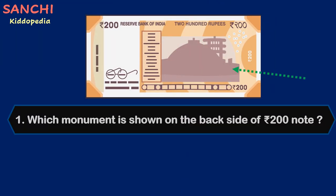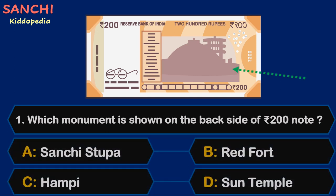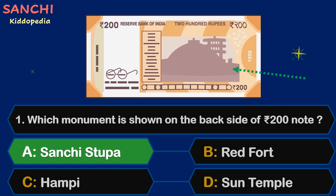Question 1. Which monument is shown on the back side of the rupee 200 note? Your options are: A. Shanti Stupa, B. Red Fort, C. Hampi, or D. Sun Temple. Your time starts now. And the answer is A. Shanti Stupa.